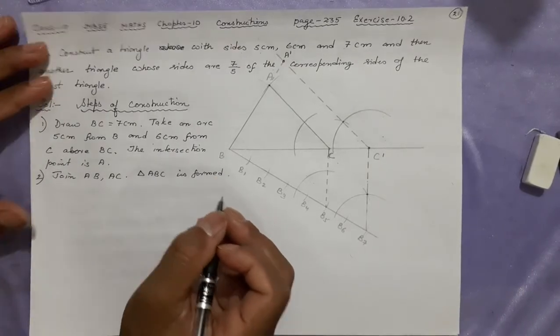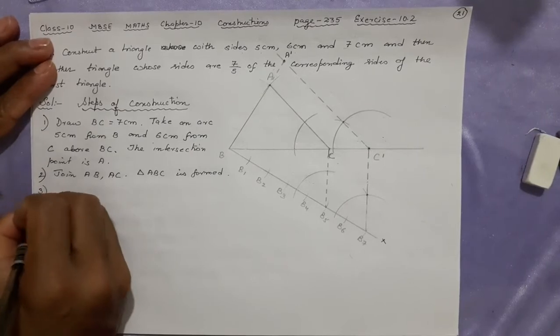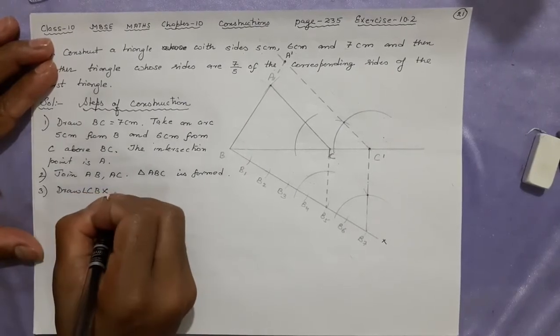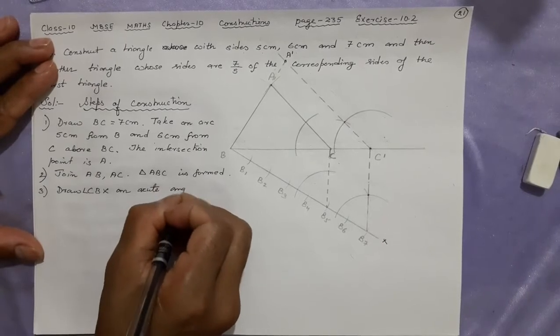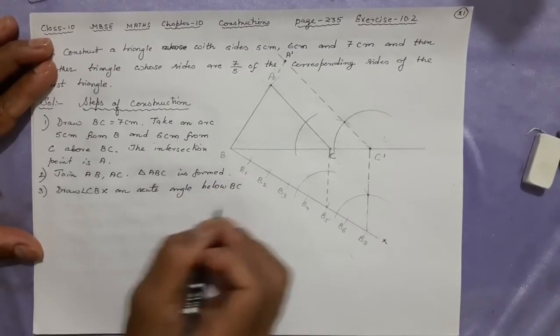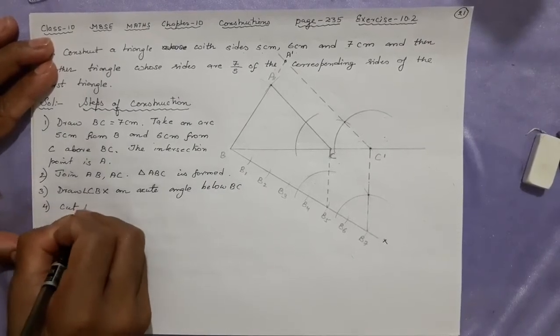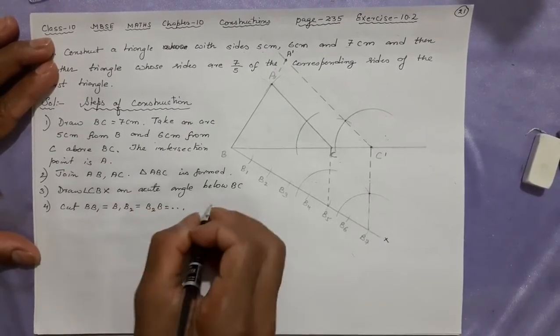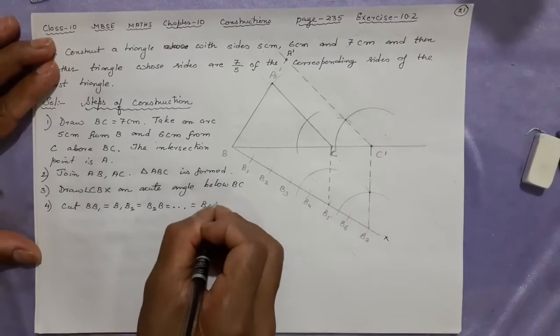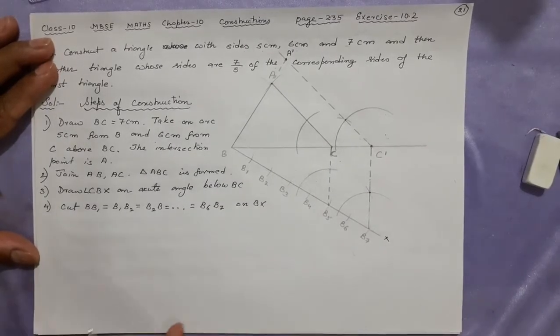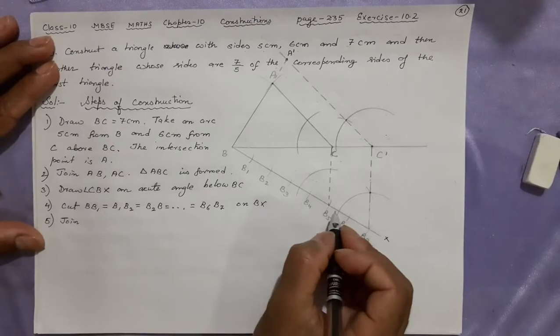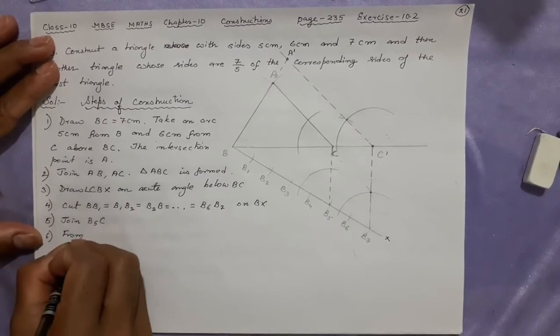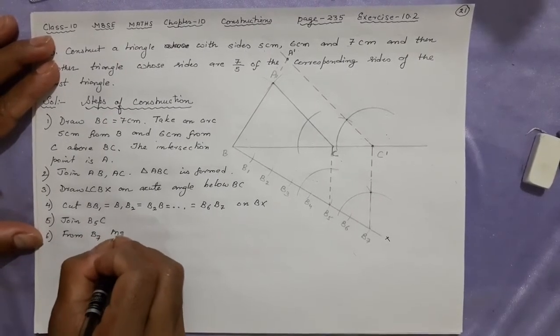After this we'll start the work. You can call it X. Draw CBX, that is angle, an acute angle below BC. Now number four, cut BB1 equal to B1B2 equal to B2B3, so on till what, the last one is B6B7 on BX. We are doing this.